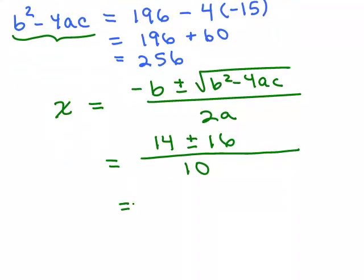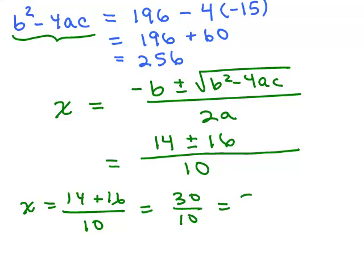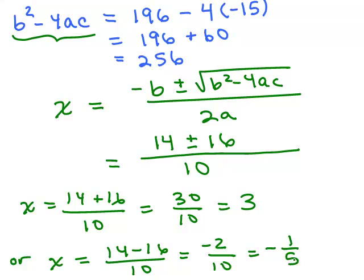So this gives us two possibilities. X can either be (14 + 16)/10, which is 30/10 or 3, or x can be (14 - 16)/10, which is -2/10 or negative 1 fifth. So the solutions, if I didn't make any mistakes, are 3 and negative 1 fifth.